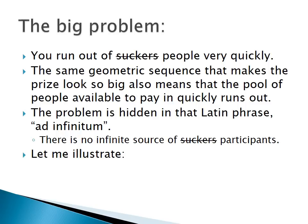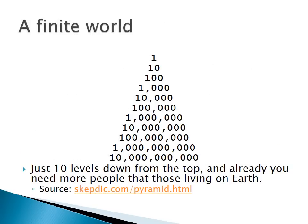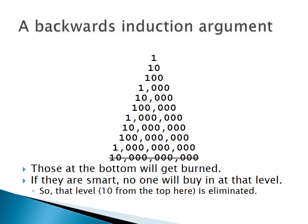The problem was hidden in that Latin phrase 'ad infinitum.' We live in a finite world, so there's no infinite source of participants. Here's a diagram from the Skeptics Dictionary. The person on the top level recruits 10 people; those 10 recruit 100, who recruit 1,000, who recruit 10,000, who recruit 100,000, and so on. Just 10 levels down from the top, you already have 10 billion people involved — more people than those living on Earth. Wherever the pyramid stops, the people at the bottom are going to get burned.